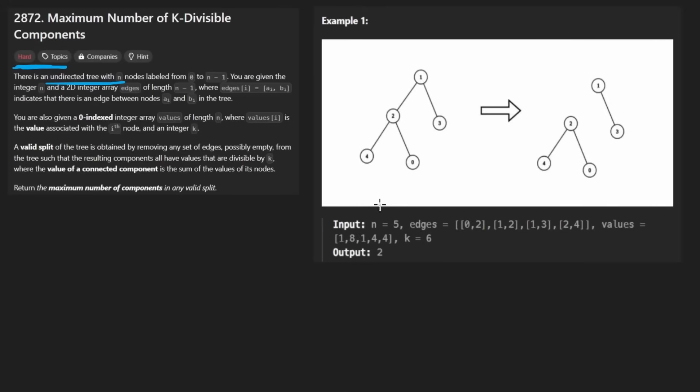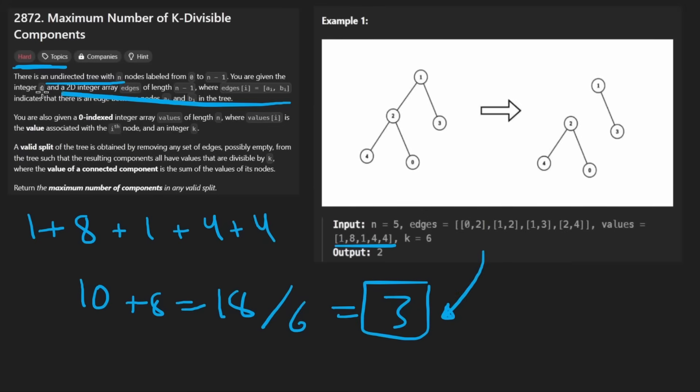What is the problem asking of us? Well, again, they don't mention this in the problem description, but they mention it at the bottom. First of all, the sum of all of these values is guaranteed to be divisible by k. The sum right now, it's not like the sum of these. It's the sum of the array here. So if I say one plus eight plus one plus four and then another four and you total all of these up, you get 10 plus eight, 18. And that is divisible by six. If you divide it by six, you get three. So what this calculation tells me, OK, I guess I'll tell you what the calculation tells me after I tell you what the problem is asking.